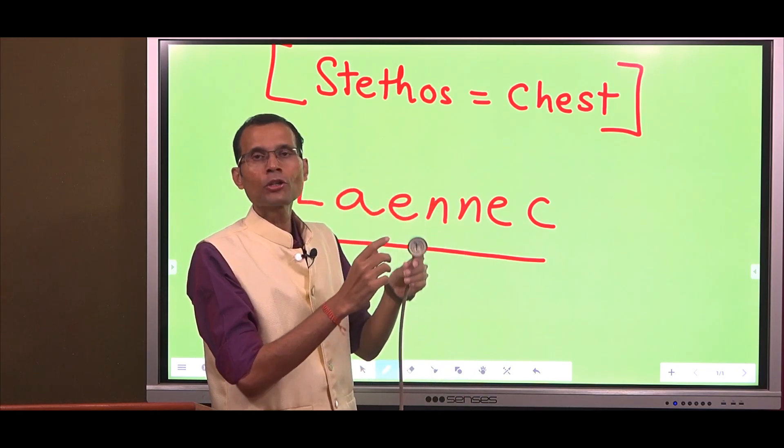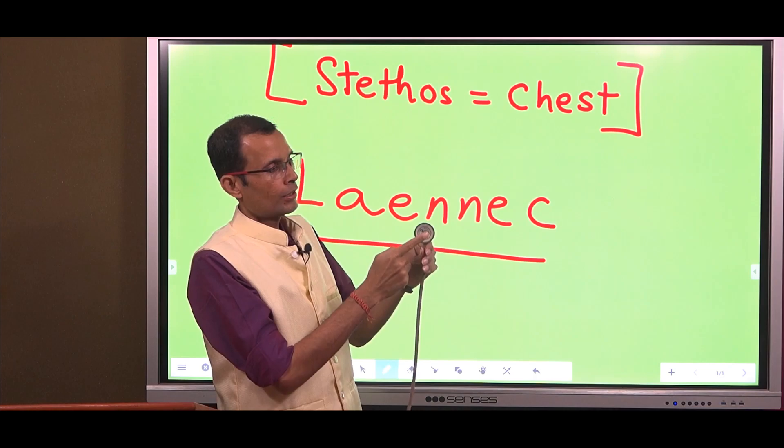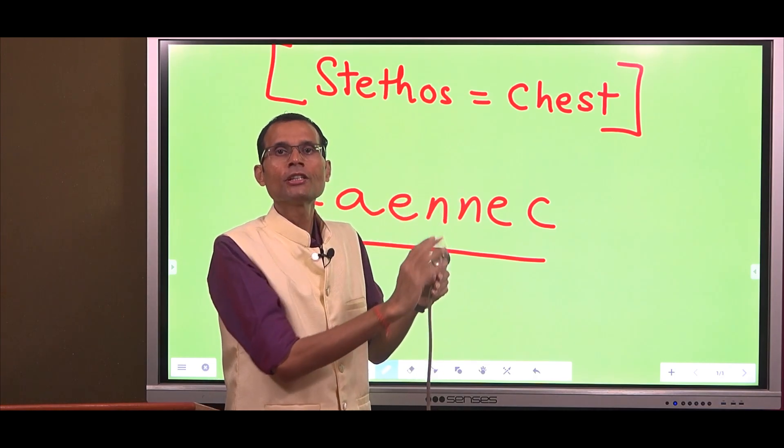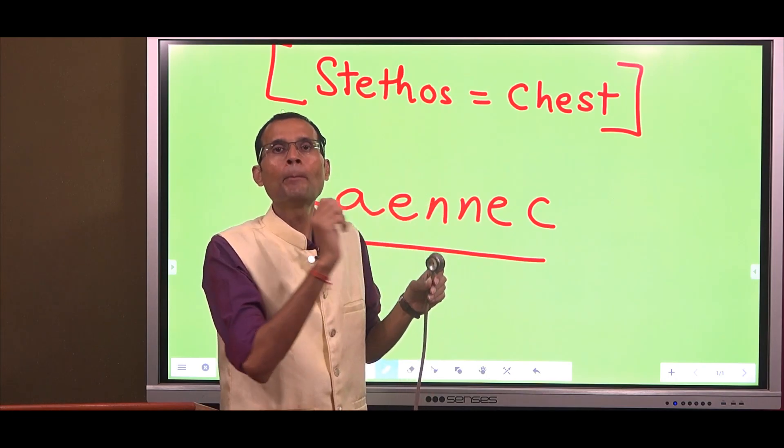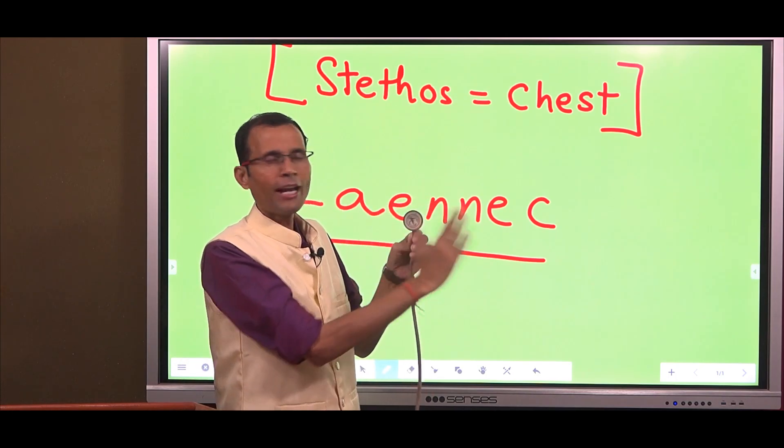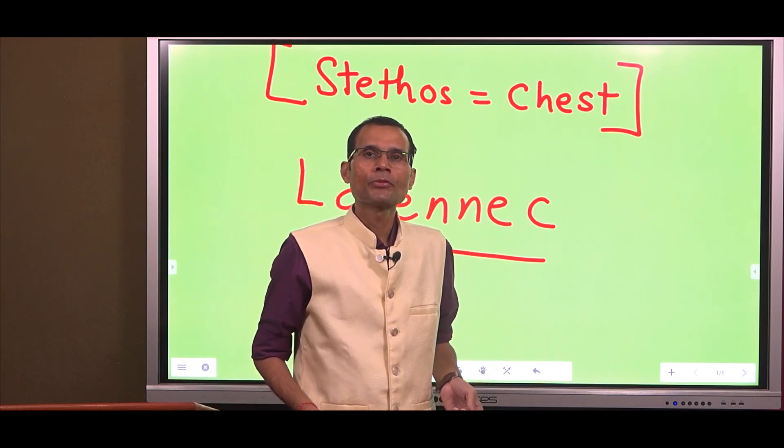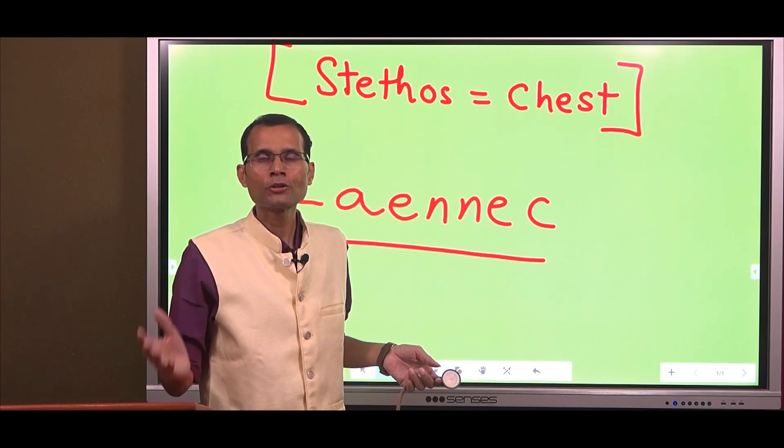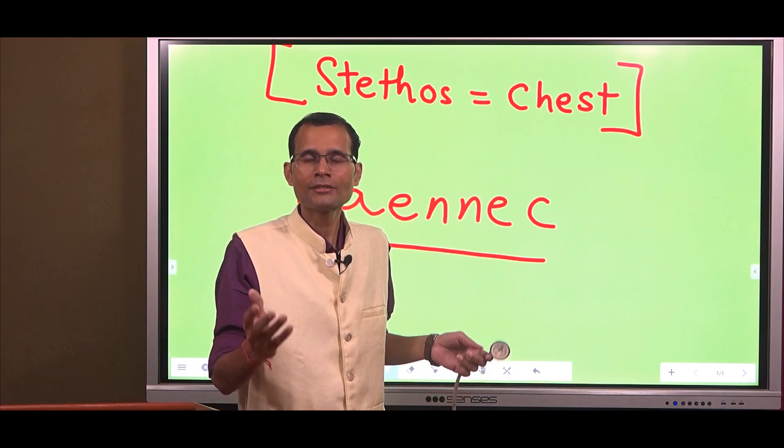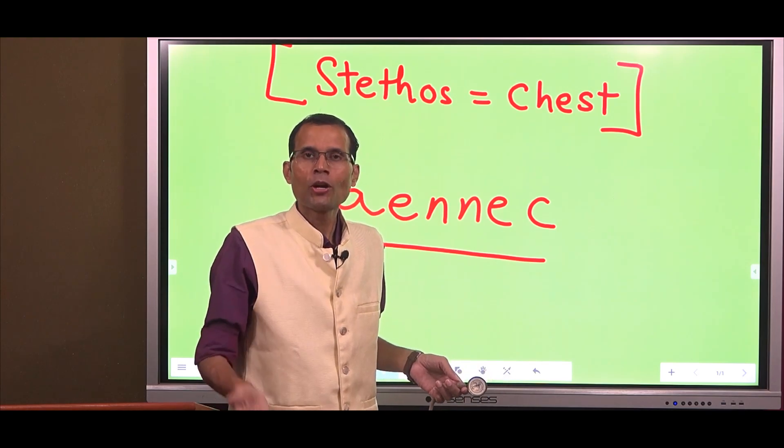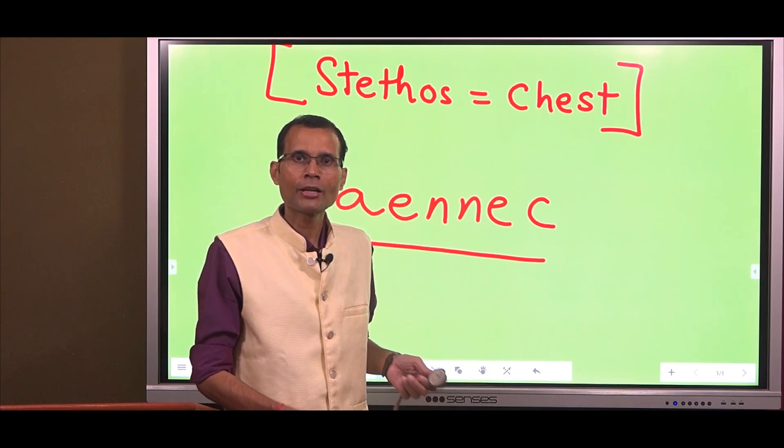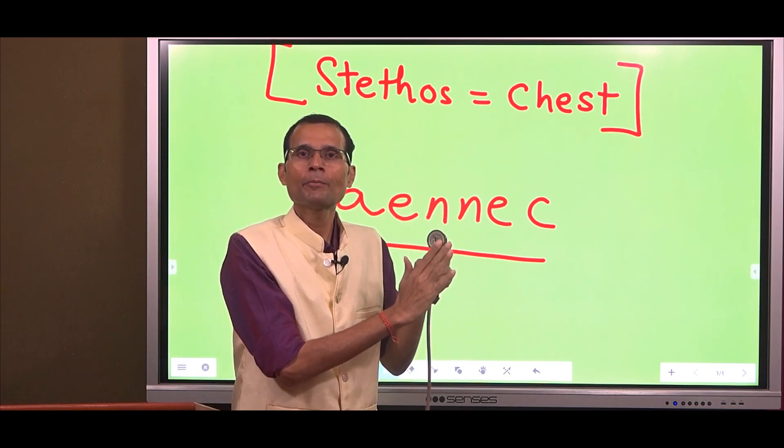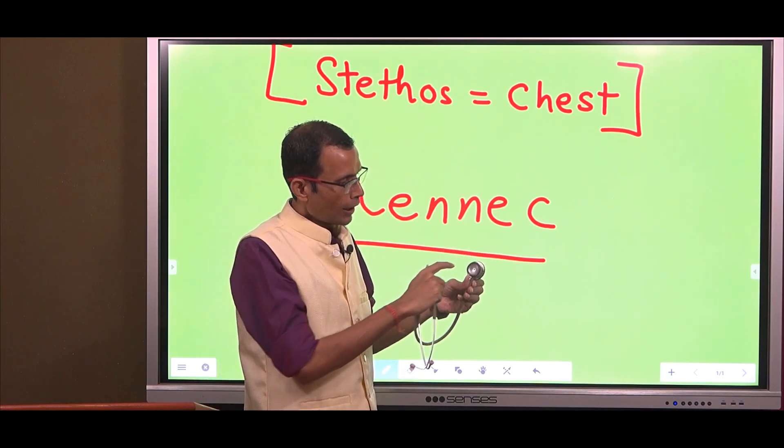If you look at the chest piece, it has got two sides - diaphragm and bell. The curved part is the bell and this is a diaphragm, flat portion. Any flat curtain-like structure is called as diaphragm. In the body also, we have at least three diaphragms - the thoracoabdominal diaphragm, the iris diaphragm, the pelvic diaphragm, flat curtain-like structure. So over here, this is the diaphragm, flat part and the bell.